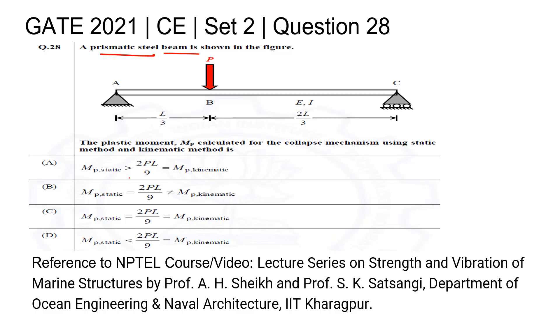For the prismatic steel beam shown, the value of mp static and mp kinematic are both equal to 2PL/9. Therefore, option C is the correct answer. Reference to the relevant NPTEL courses or video has been cited.